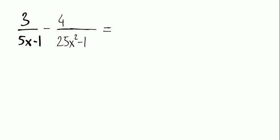Okay, another example: 3 over 5x minus 1, minus 4 over 25x squared minus 1. The second denominator is 25x squared minus 1.